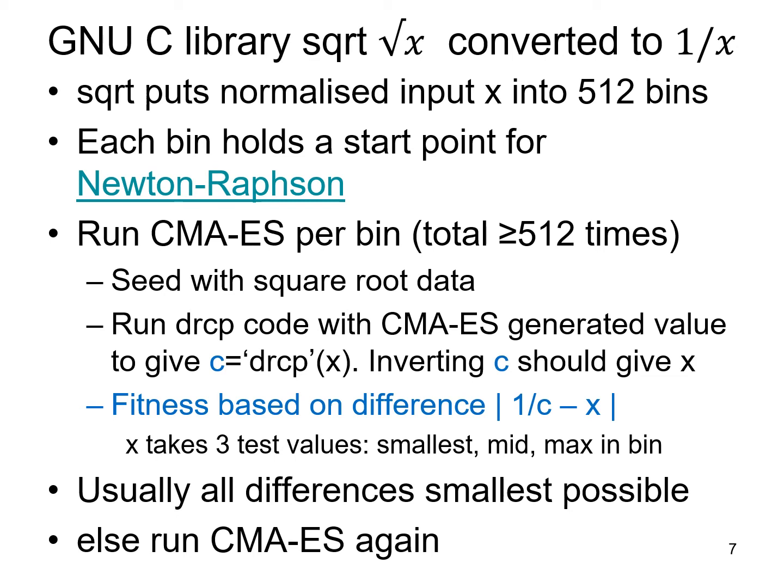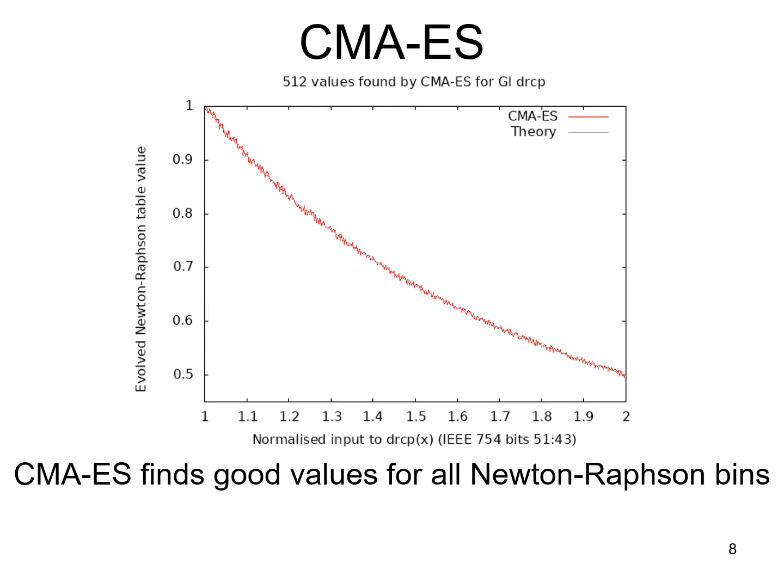If we're slightly off then Newton-Raphson may not converge precisely, so the goal is to get the right start point so we do converge to exactly the right answer. We test the evolved value for each bin by taking the smallest value in the bin, the midpoint, and the maximum — so three test values. Usually CMA-ES produces the absolute best answer on all three; if not, we restart and run CMA-ES on that bin again. This graph simply emphasizes that CMA-ES is finding good values.